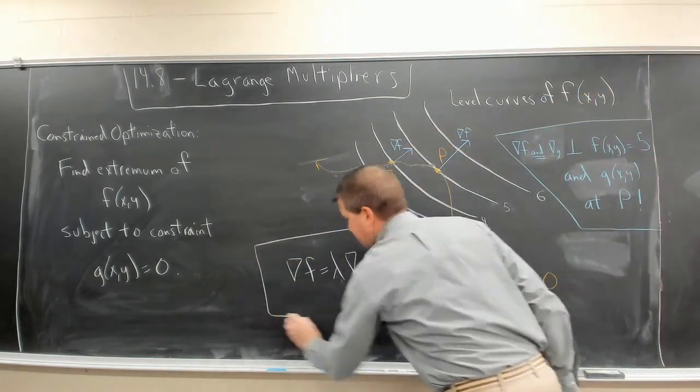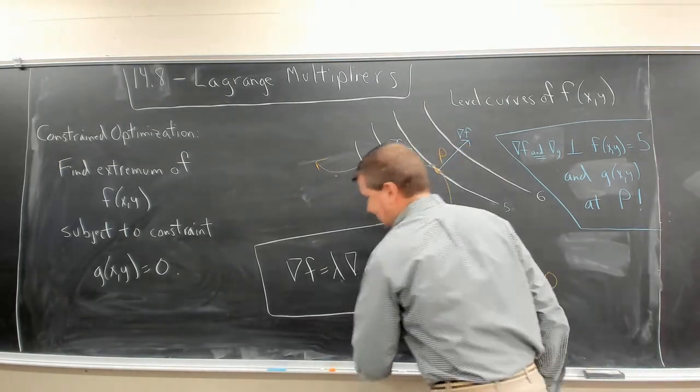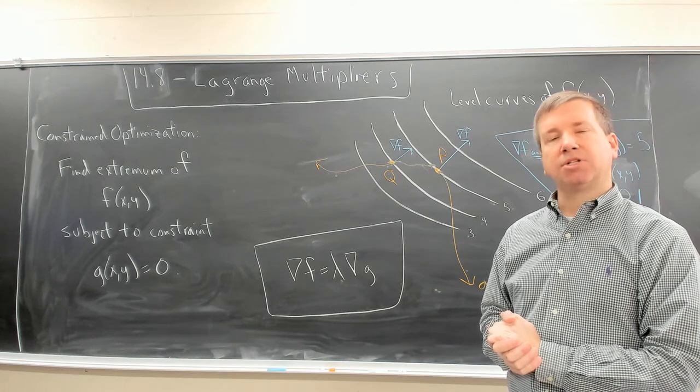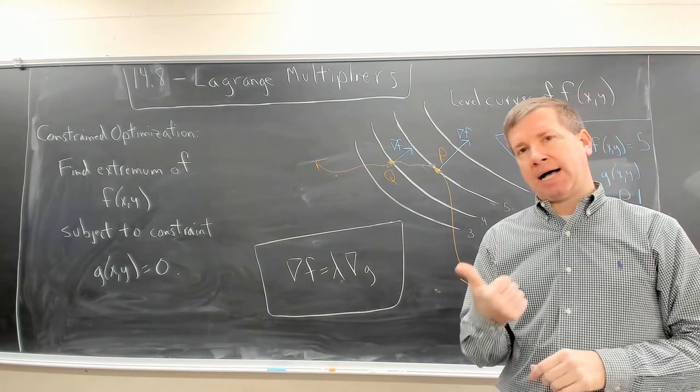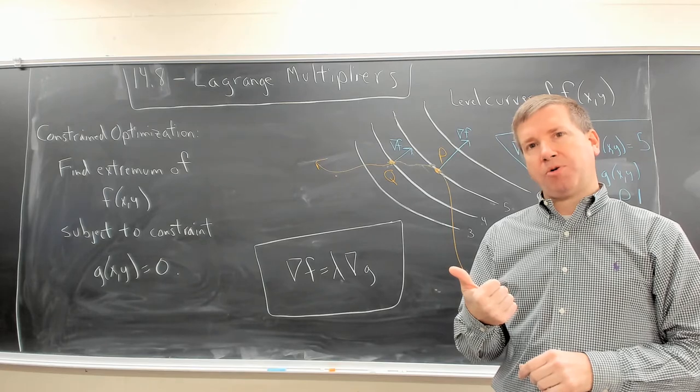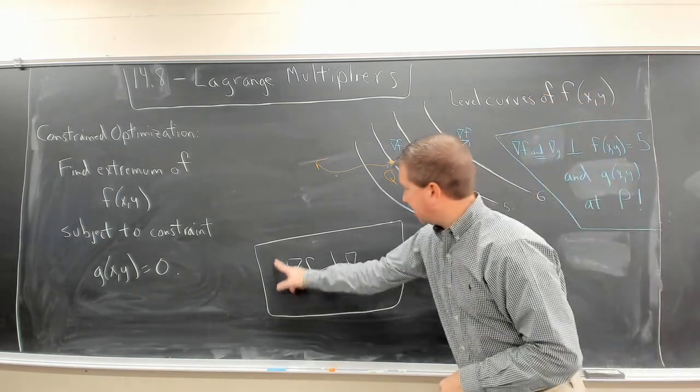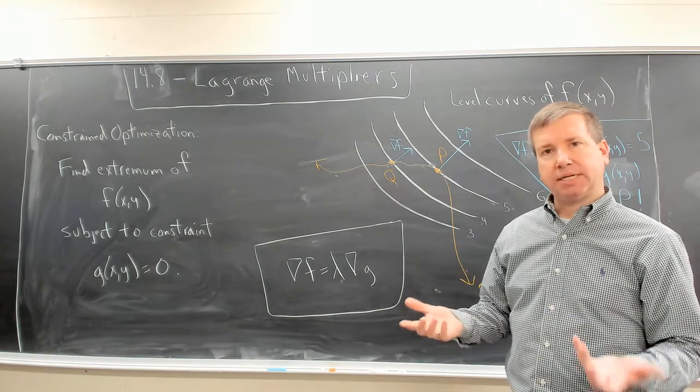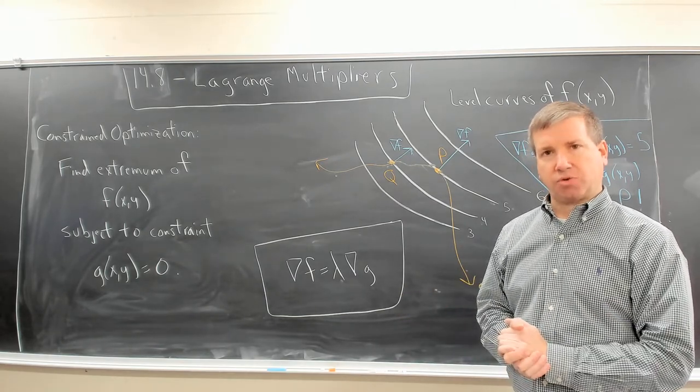This is the main idea conceptually behind the method of Lagrange multipliers. We search for a constant lambda and an ordered pair x, y that satisfies this equation. That point is our extremum.